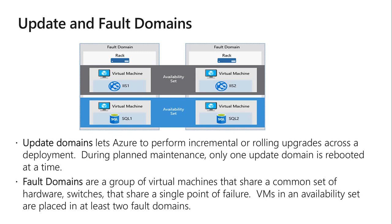A fault domain defines a group of VMs that share a common set of hardware — including switches, server racks, and power supplies — forming a single point of failure. VMs in the availability set are placed in at least two fault domains, which minimizes the effects of hardware failure, network outage, power interruptions, or software updates. Note that placing VMs in availability sets does not protect your application from OS or application-specific failures — for those you need disaster recovery and backup techniques.